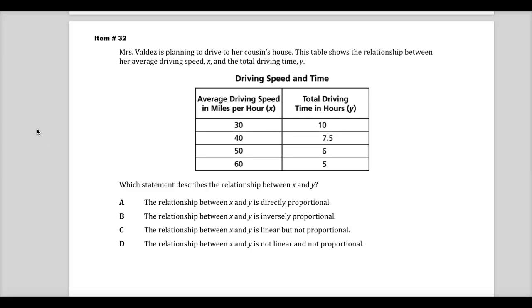Welcome. This is item number 32 from the release spring 2014 test items for the 7th grade TCAP math test. The question says, Mrs. Valdez is planning to drive to her cousin's home. This table shows the relationship between her average driving speed and the total driving time. Which statement describes the relationship between X and Y?